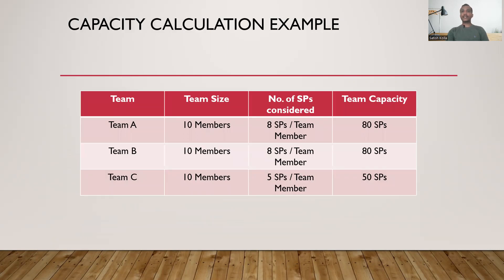How does the capacity calculation look? Let's suppose we take three teams of 10 members each. For team A and team B, we consider 8 story points per team member — so 10 members times 8 story points equals 80 story points capacity. Team C, being a brand new team where the technology, domain, and tools are new, may consider only partial capacity — for example, 5 story points per member, giving team C a capacity of 50 story points for that given sprint.